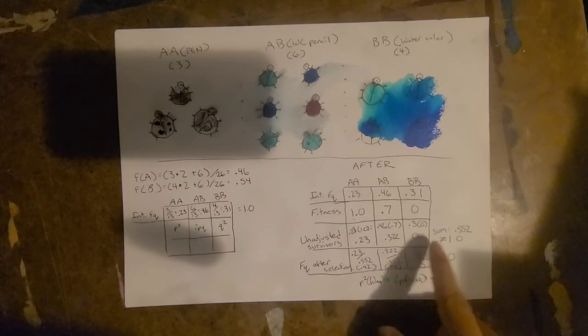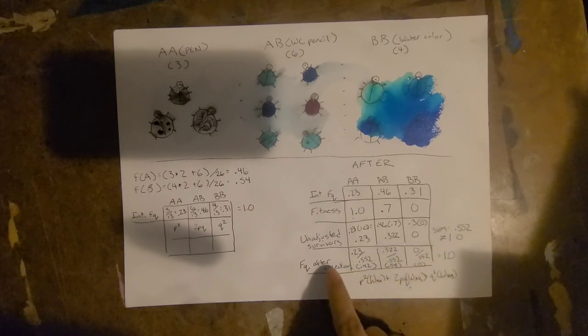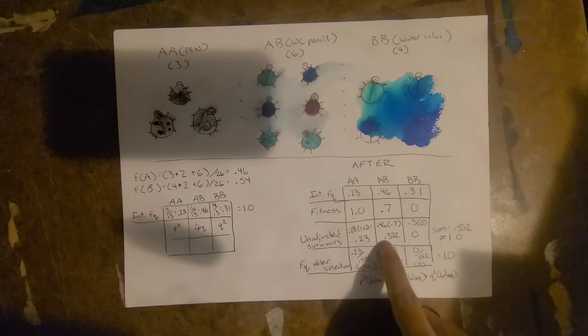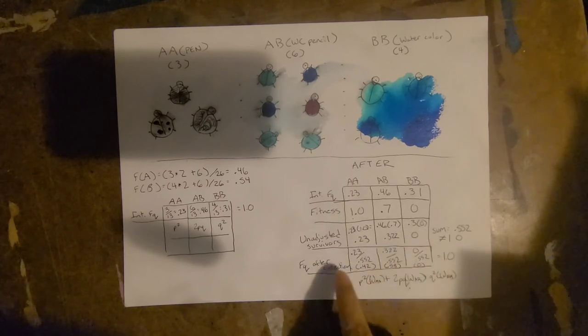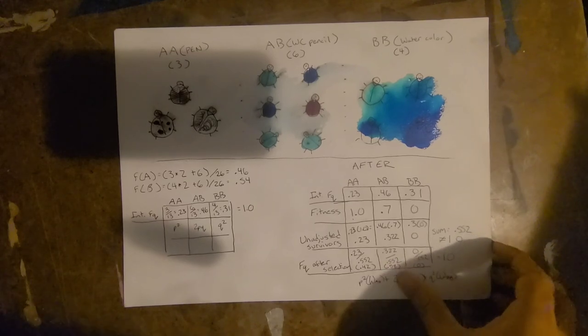And the sum of these will be the weighted fitness average, 0.552, and dividing the unadjusted survivors by 0.552 will give us the frequency after selection, 0.42, 0.58.